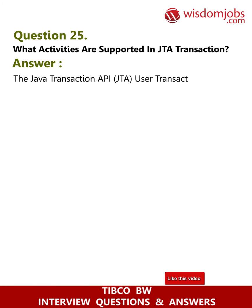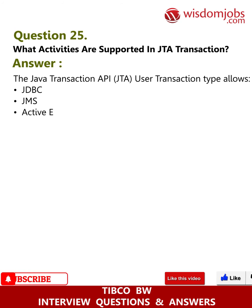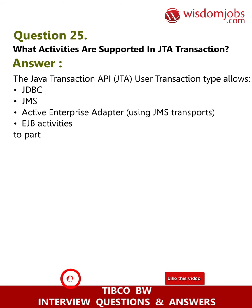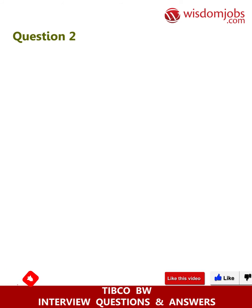Question 25: What activities are supported in a JTA transaction? Answer: The Java Transaction API (JTA) User Transaction type allows JDBC, JMS, Active Enterprise Adapter using JMS transports, and EJB activities to participate in transactions.